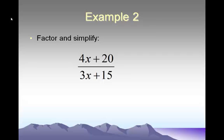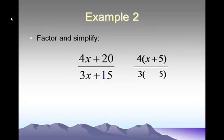We're going to factor the top by taking out a greatest common factor of 4. When we take out the 4, we're left with (x + 5) inside. On the bottom, take out the greatest common factor of 3 and we're left with (x + 5). We have (x + 5) on top and bottom of the fraction — they cancel out. We're left with 4 over 3 for a final answer.